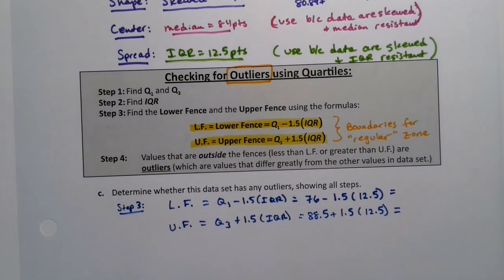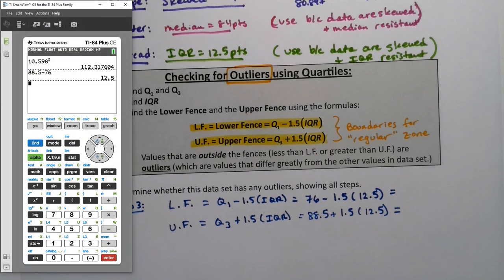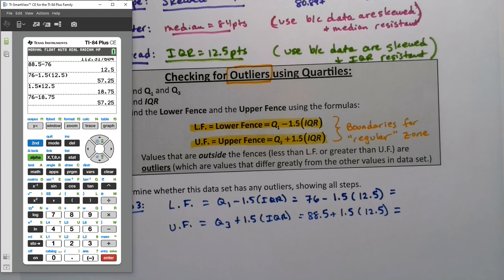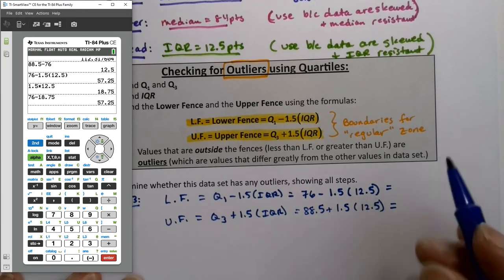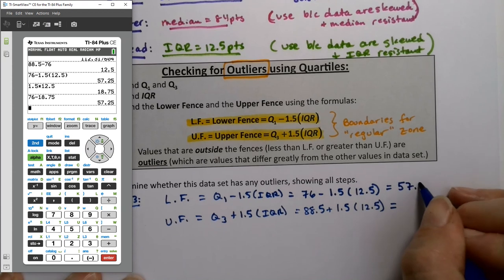So I'm going to need a calculator to find both of these values. But I want to make sure I highlight these fence formulas because these are things I would need on an exam. So 76 minus 1.5 parentheses 12.5, type it like it looks. Order of operations says that the multiplication takes place first. So you need to multiply 1.5 times 12.5 and then take 76 minus that value. So this is 57.25.